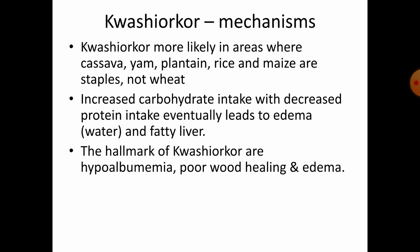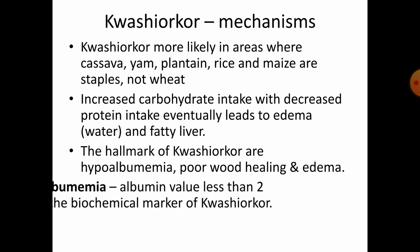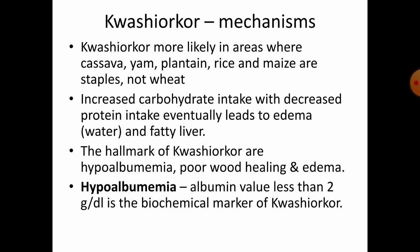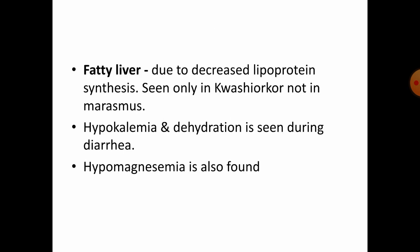The hallmarks of Kwashiorkor are hypoalbuminemia and poor wound healing with edema. Albumin levels will be less than 2 g/dL — that is the biological marker of Kwashiorkor. In Marasmus, albumin level is not too low. Fatty liver due to decreased lipoprotein synthesis is seen only in Kwashiorkor, not Marasmus. Hypokalemia and dehydration are also seen due to diarrhea, which causes loss of electrolytes and water from the body.